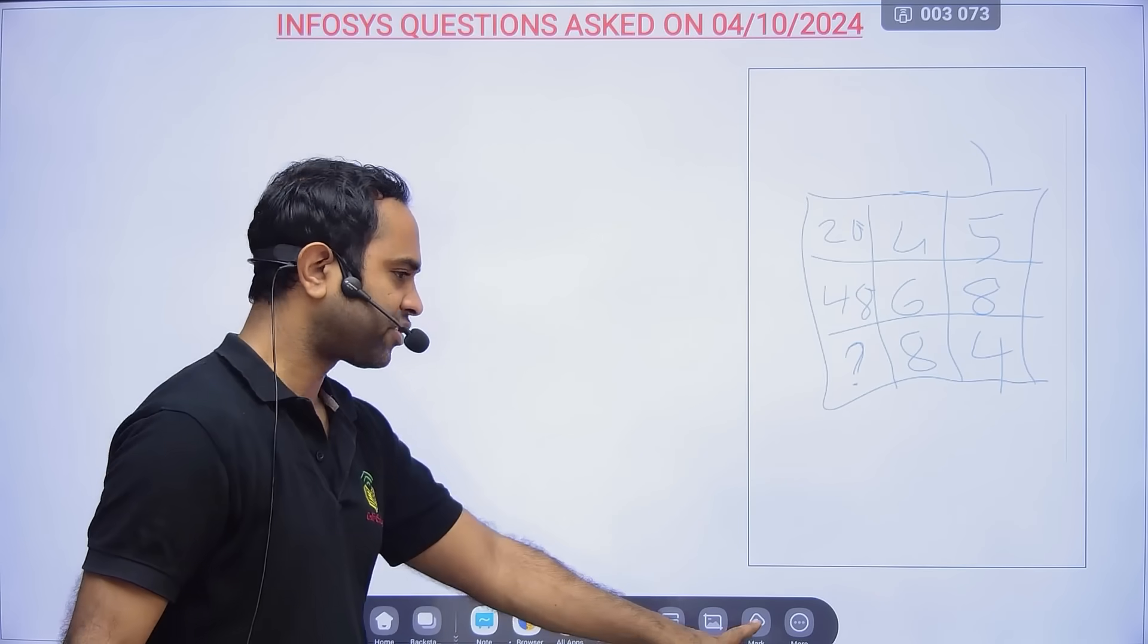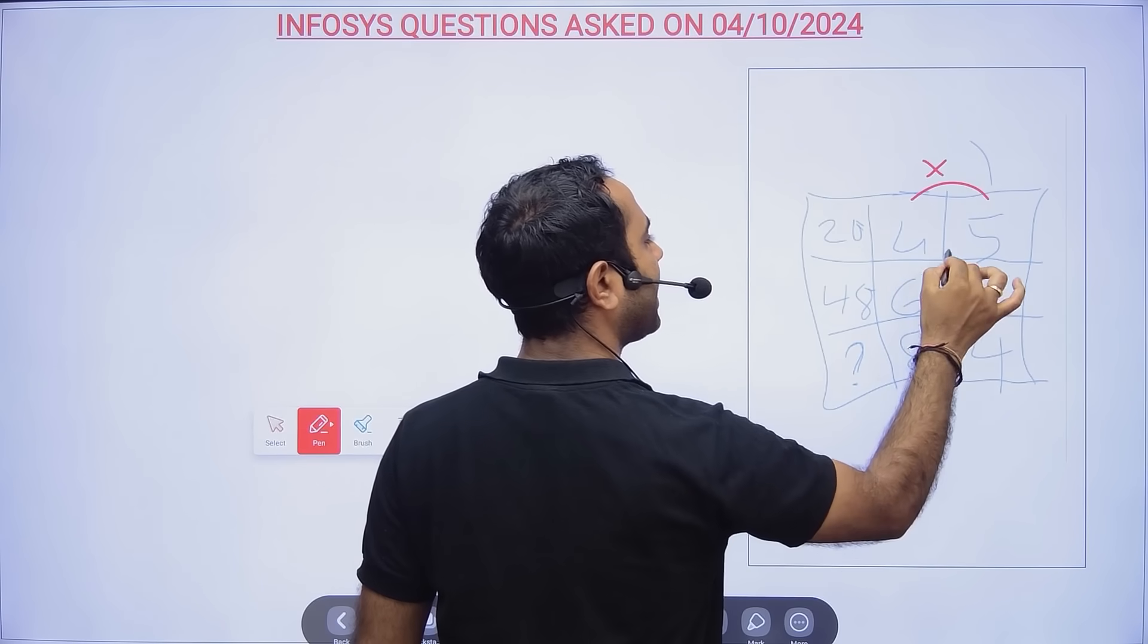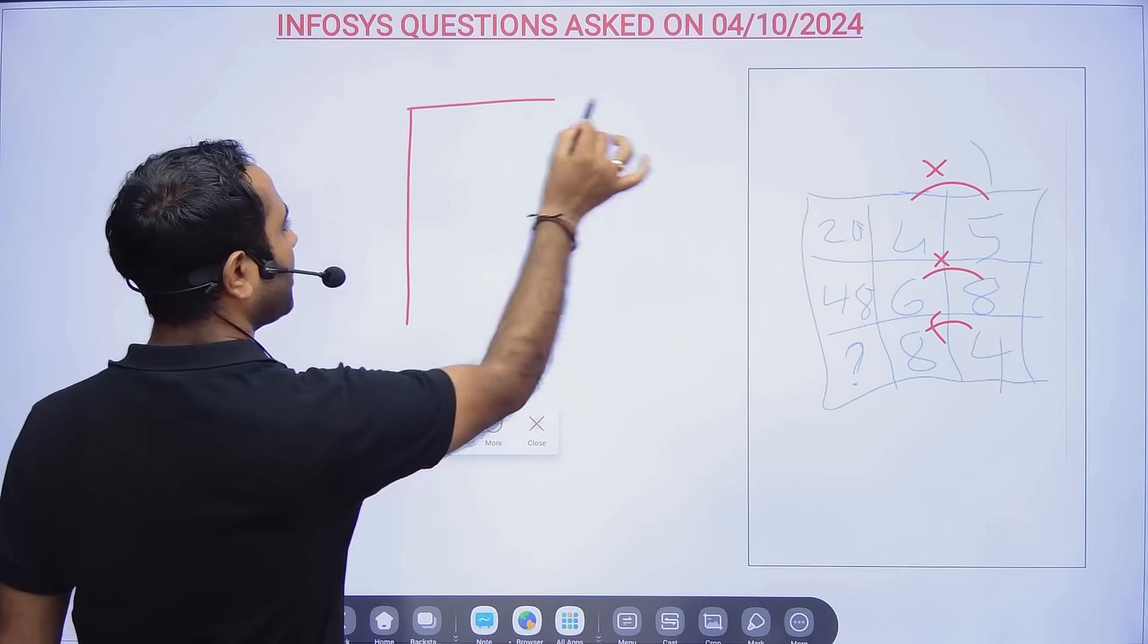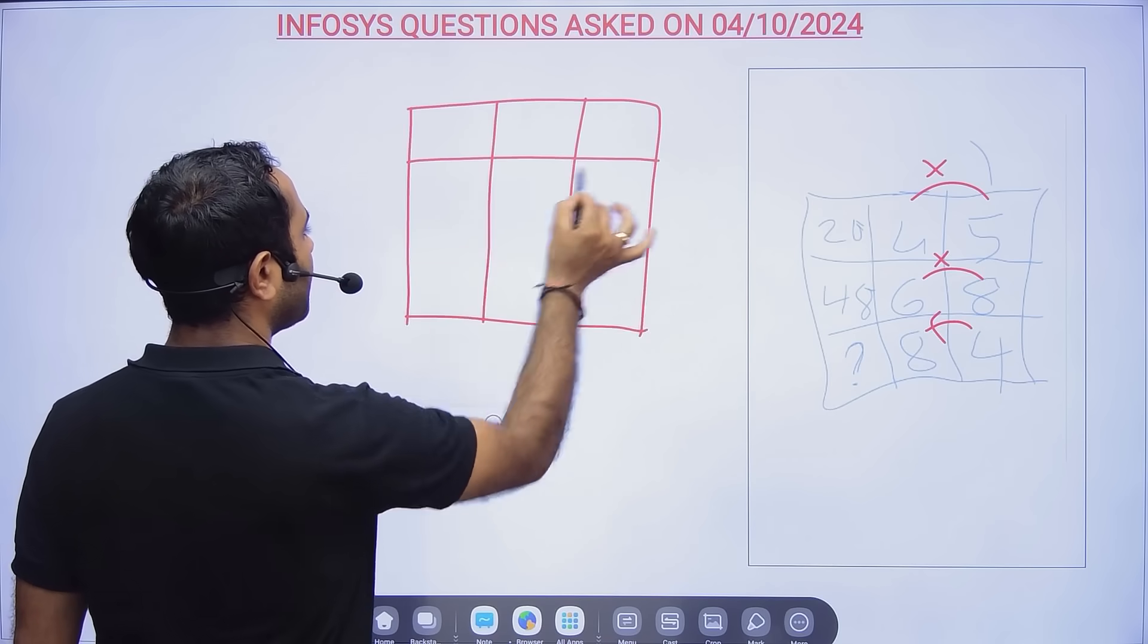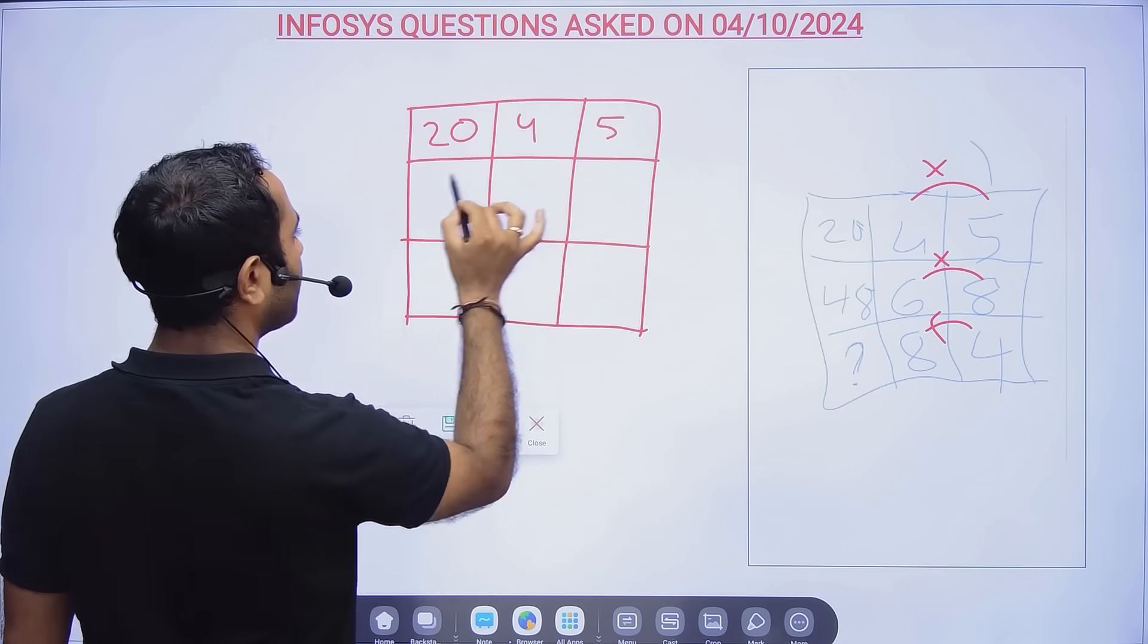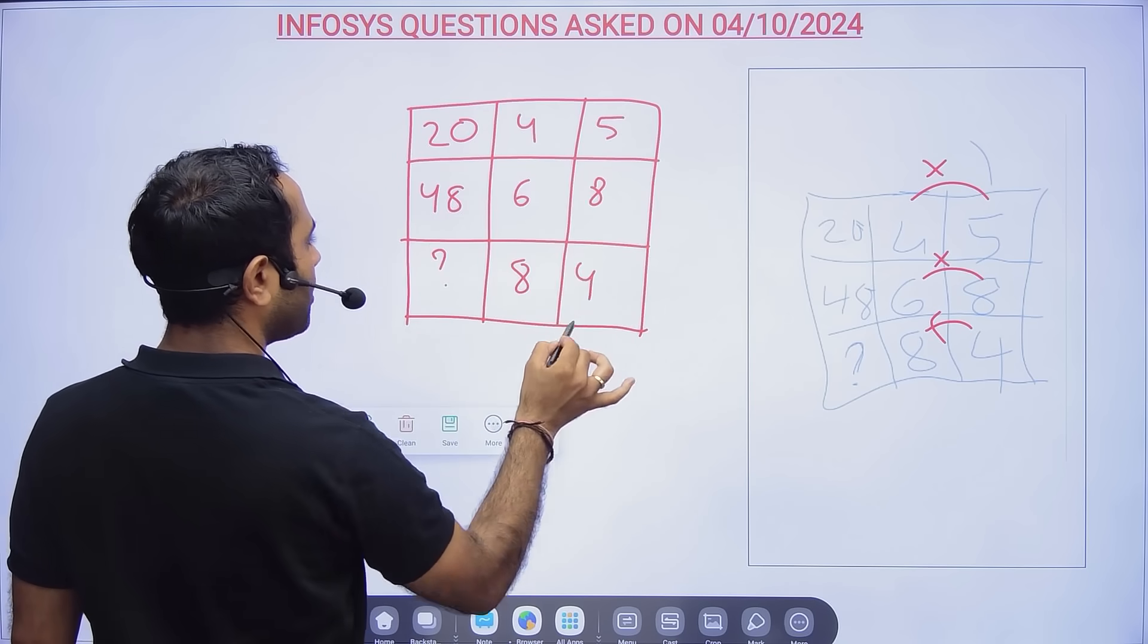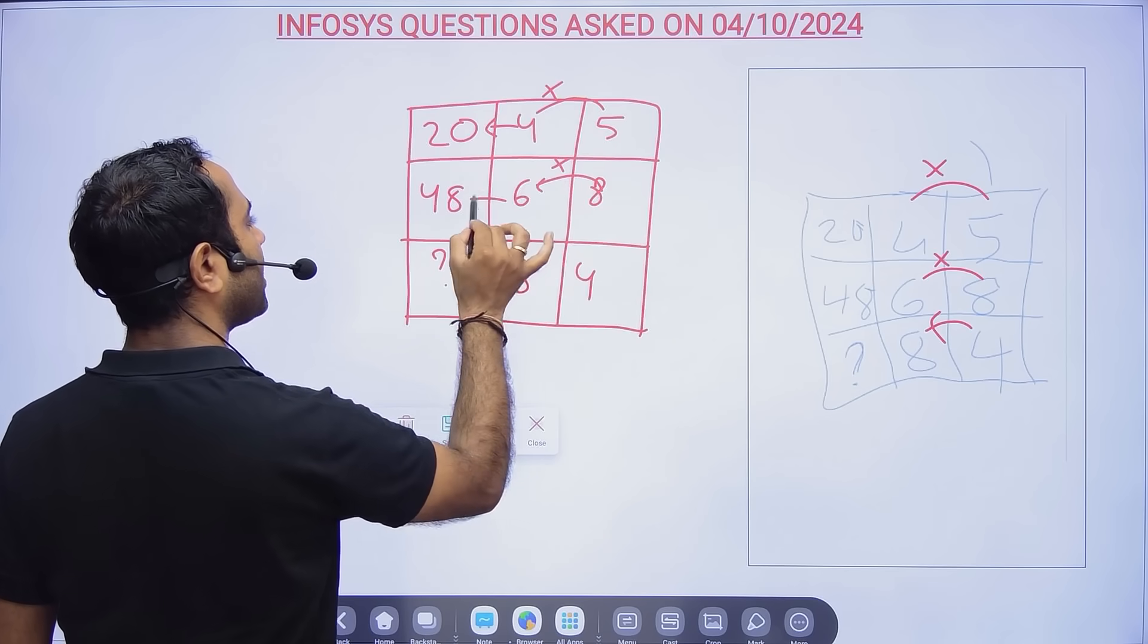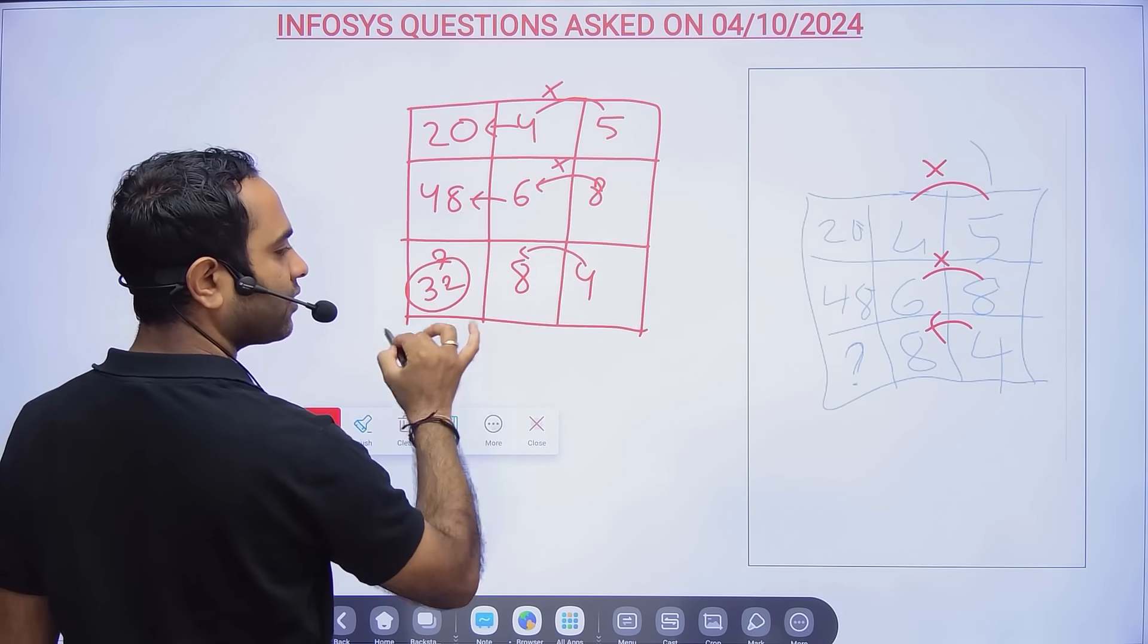This was a straightforward question. 20, 4, 5; 48, 6, 8; question mark, 8, 4. This is 5 × 4 = 20, 8 × 6 = 48, and 4 × 8 = 32. So here 32 was the answer.